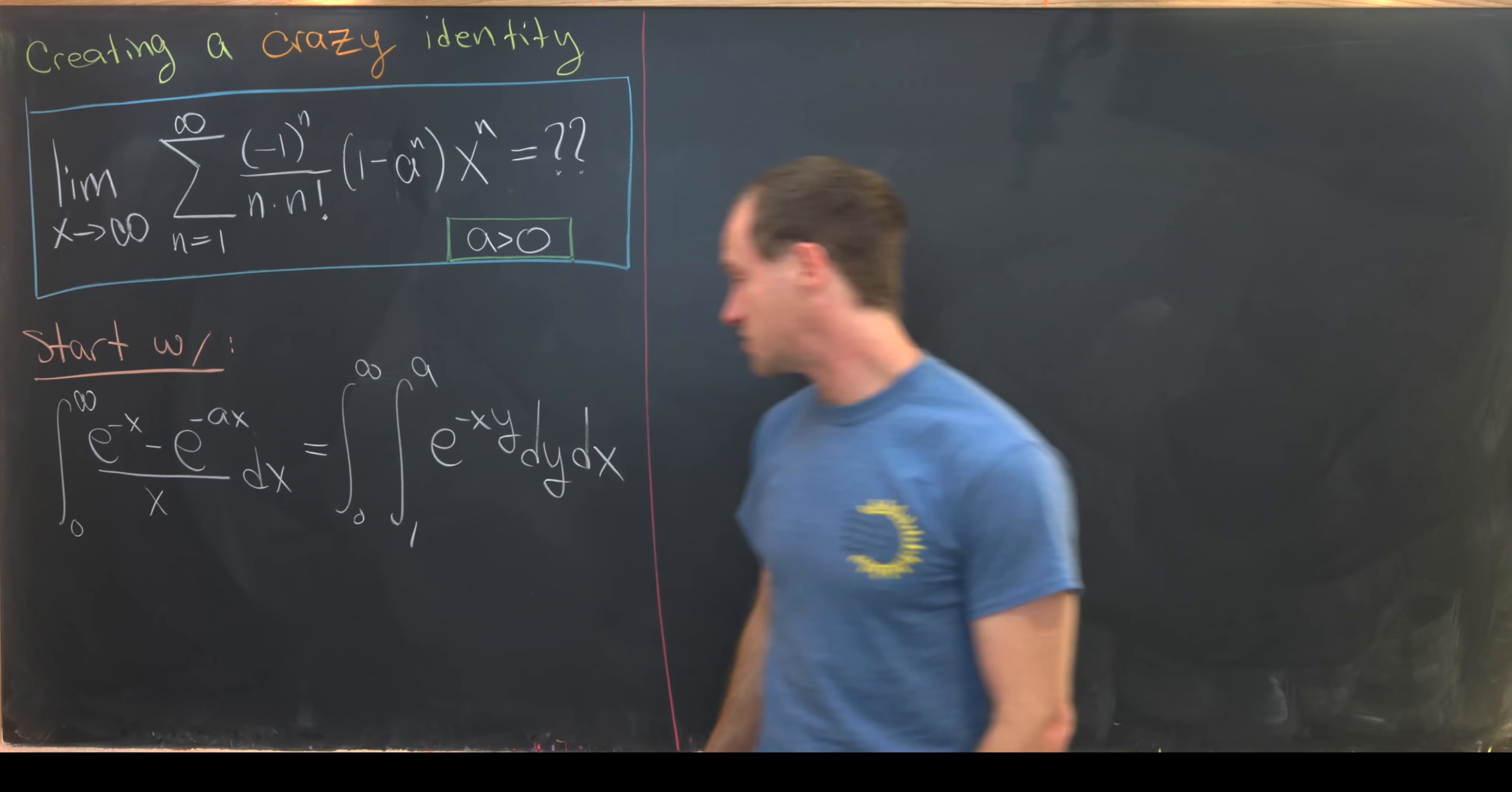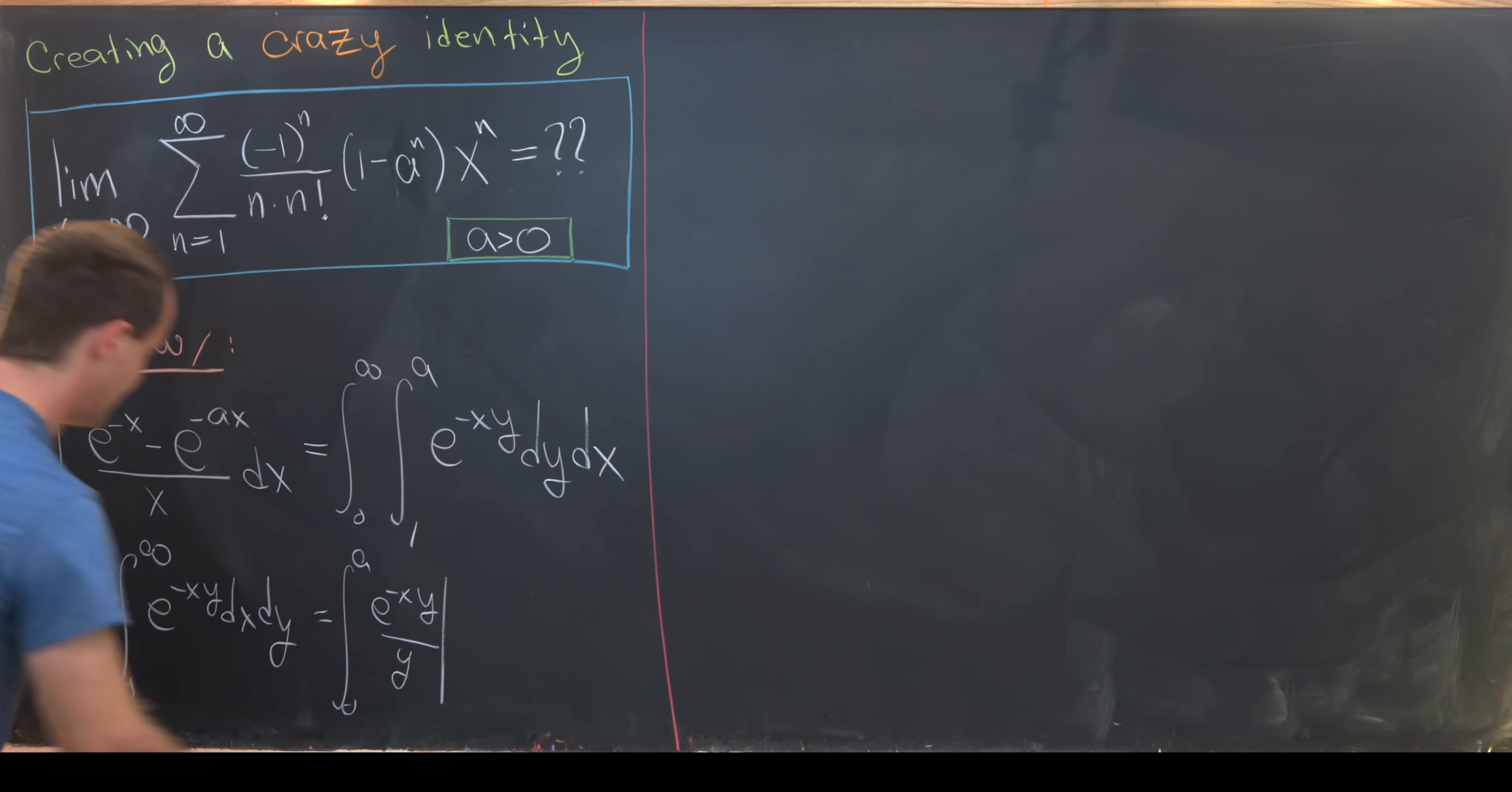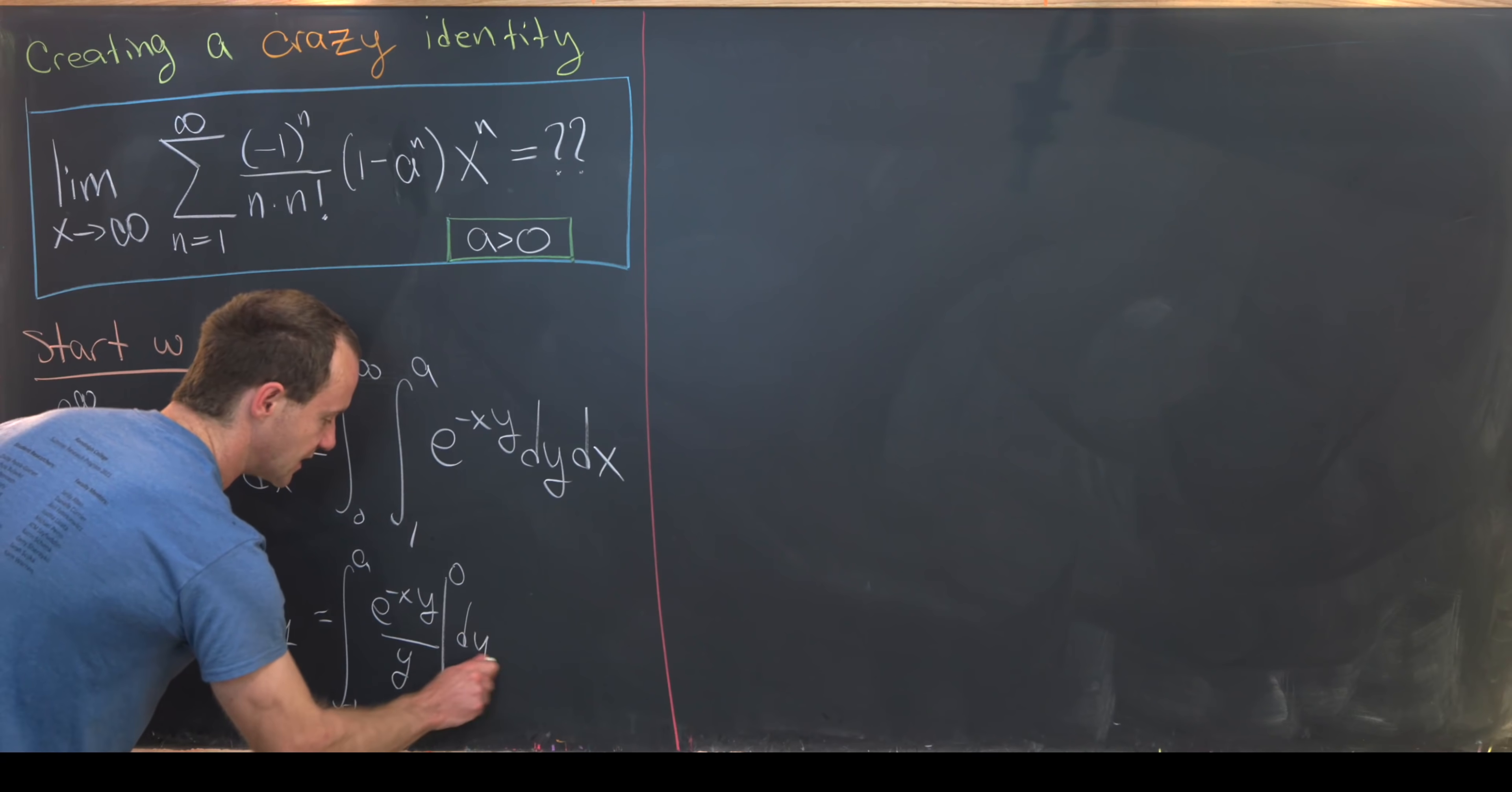Now let's change the order of integration. We'll have the integral from 1 to a of the integral from 0 to infinity of e to the minus xy dx dy. Now we can take this x integral on the inside. That'll give me the integral from 0 to a of e to the minus xy over y evaluated from 0 on the top to infinity on the bottom, where I changed my order of integration given the fact that I have this minus sign here.